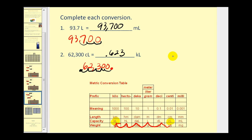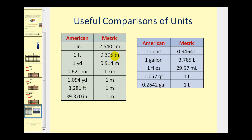That's pretty much it for converting length, capacity, and mass using the metric system. As you can see from these examples, it is very important to become familiar with this conversion table so we can do the conversions quickly and easily. The video ends with a comparison table between the American and metric systems, so you can get a better idea of how these measurements compare. I hope you found this video helpful. Thank you for watching.